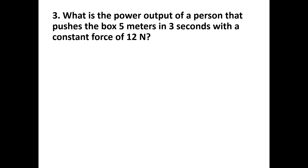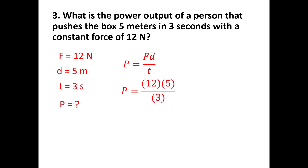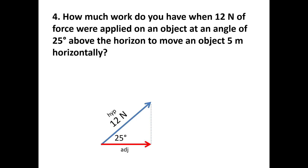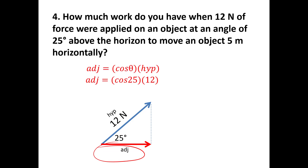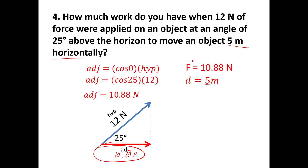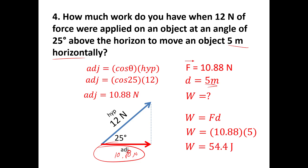What is the power output of a person pushing a box 5 meters in 3 seconds with 12 newtons? Using P = FD/t: P = (12 × 5)/3 = 20 watts. Next, how much work is done when 12 newtons of force is applied at 25 degrees over 5 meters horizontally? Find the horizontal component: cos(25°) × 12 = 10.88 newtons. Then W = 10.88 × 5 = 54.4 joules.